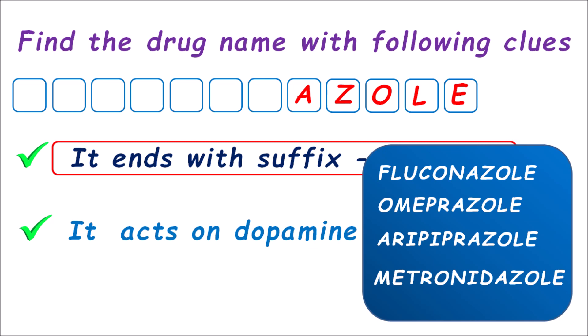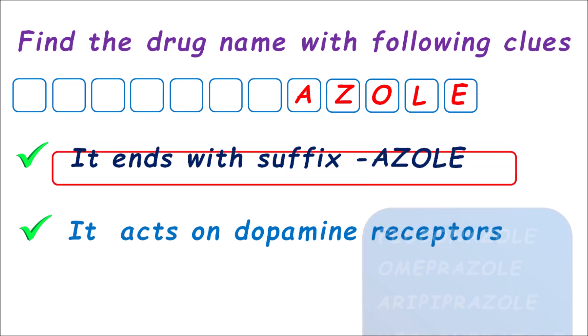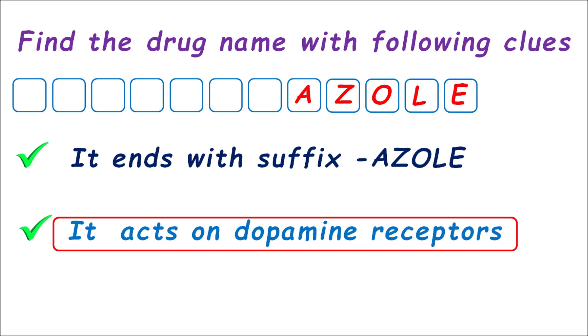Within these blocks we can fill any drug from the following categories: it may be an azole antifungal, a proton pump inhibitor, aripiprazole, or an anti-amoebic agent. Then what is the right answer for this puzzle? In order to identify the right answer we have to go to the next clue: it acts on dopamine receptors. But first, let us see what is the difference between these drugs and their suffixes.